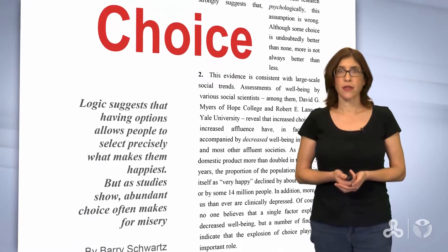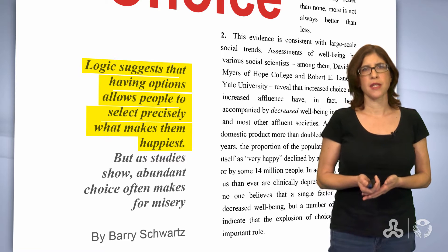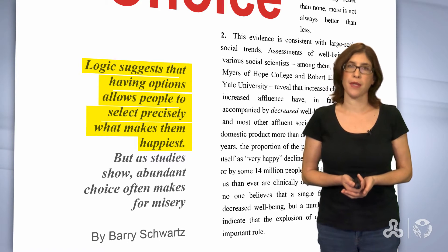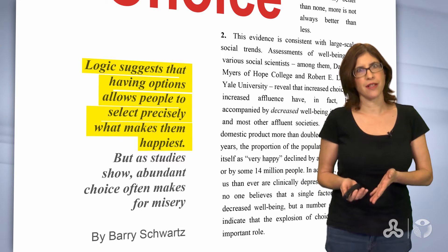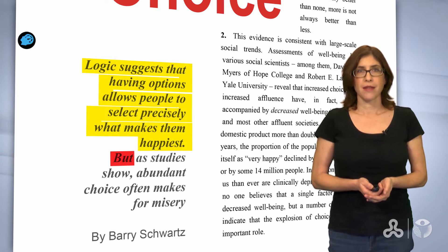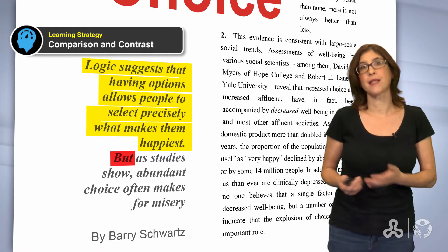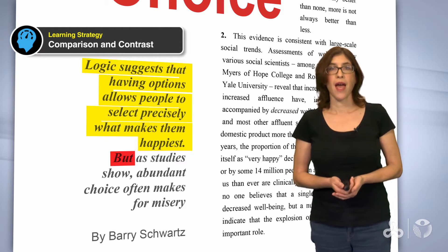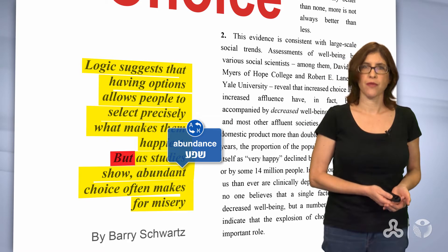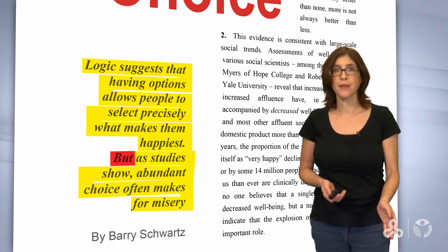Let's look at the sentence under the title. Logic suggests that having options allows people to select precisely what makes them happiest. That sounds logical and positive. But notice the marker of contrast — after 'but,' you can expect to read the opposite of what has been said. As studies show, just as we expected, after the 'but' comes the negative.